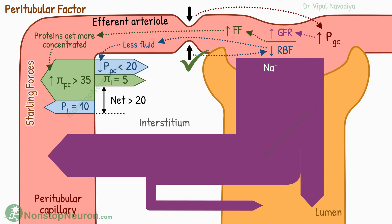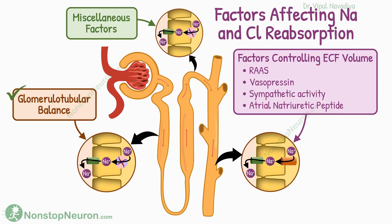Remember, this mechanism works only with efferent arteriolar resistance. It does not work for changes in afferent arteriolar resistance, because the filtration fraction is not affected in that case, so the net driving force is also not affected much. So this was glomerulotubular balance.